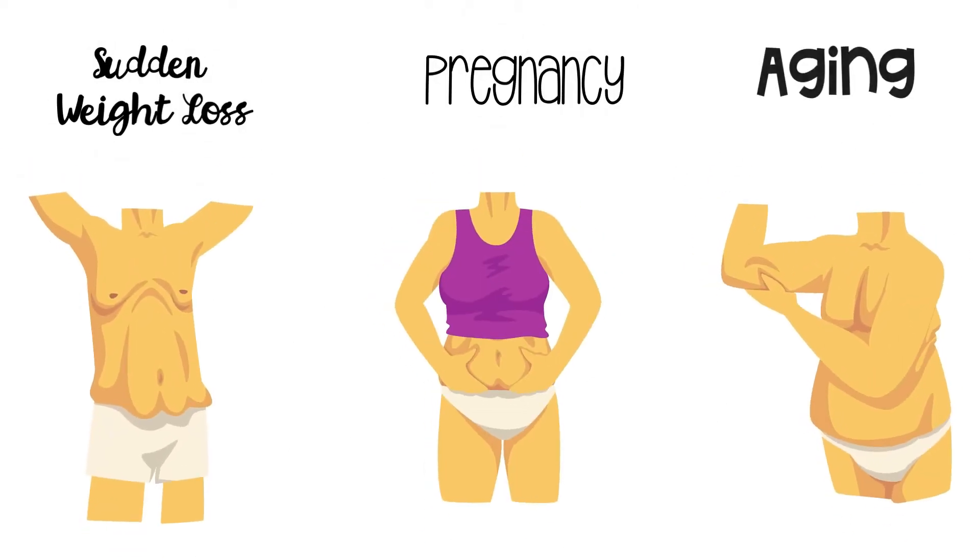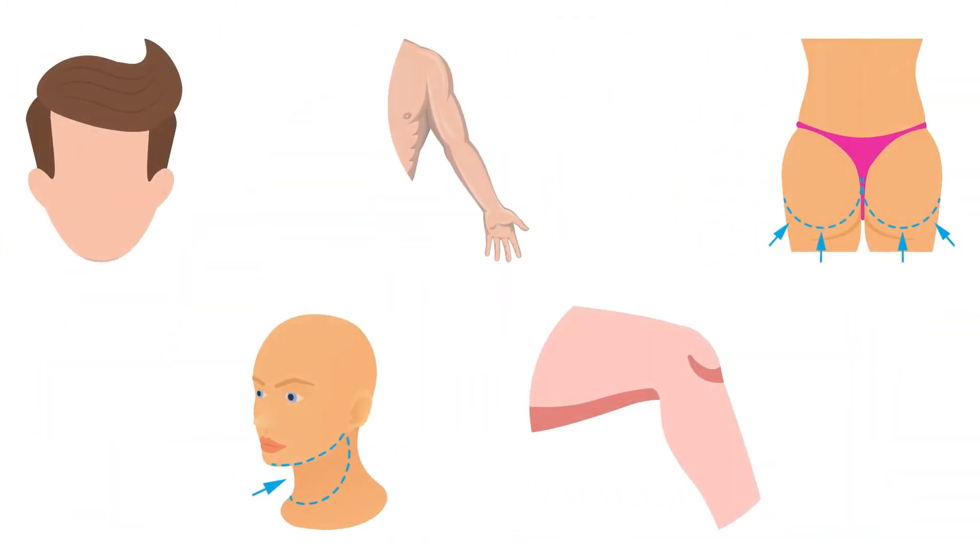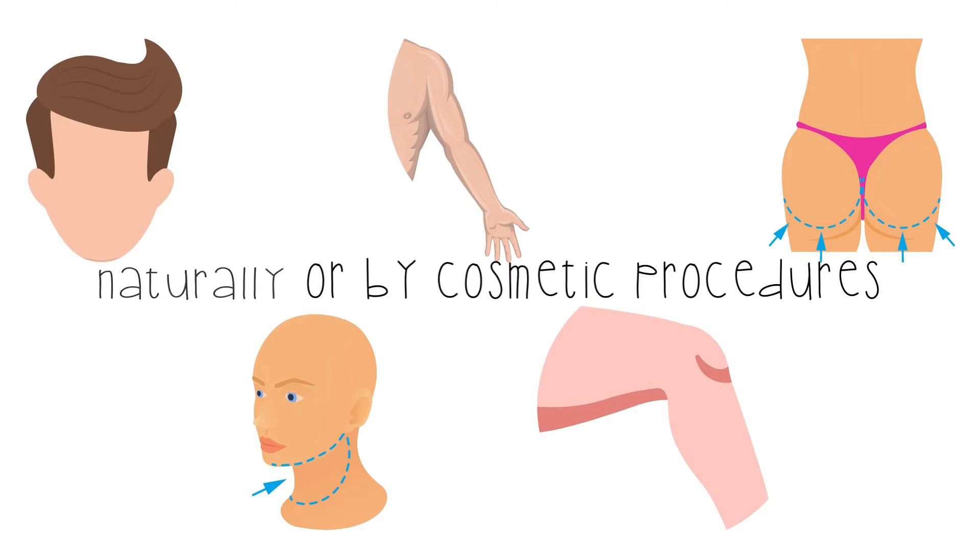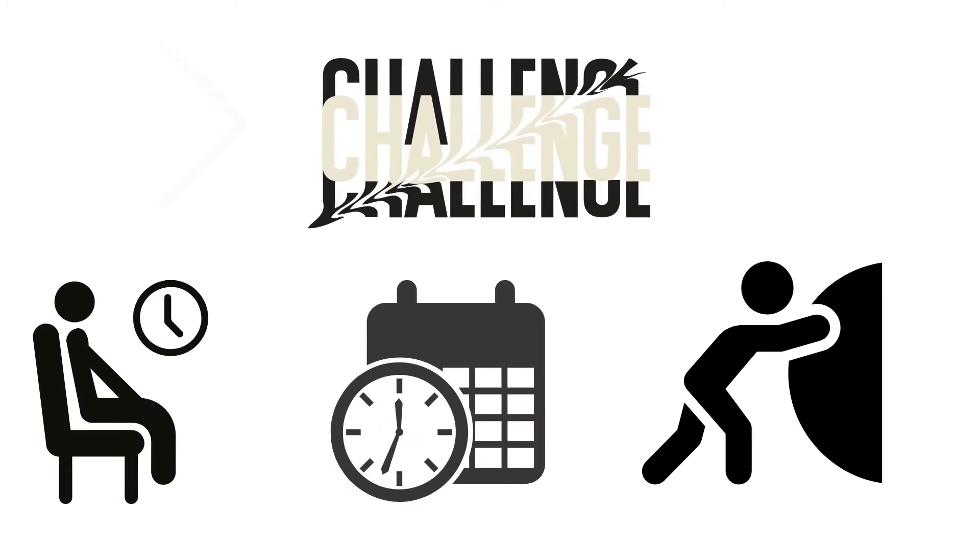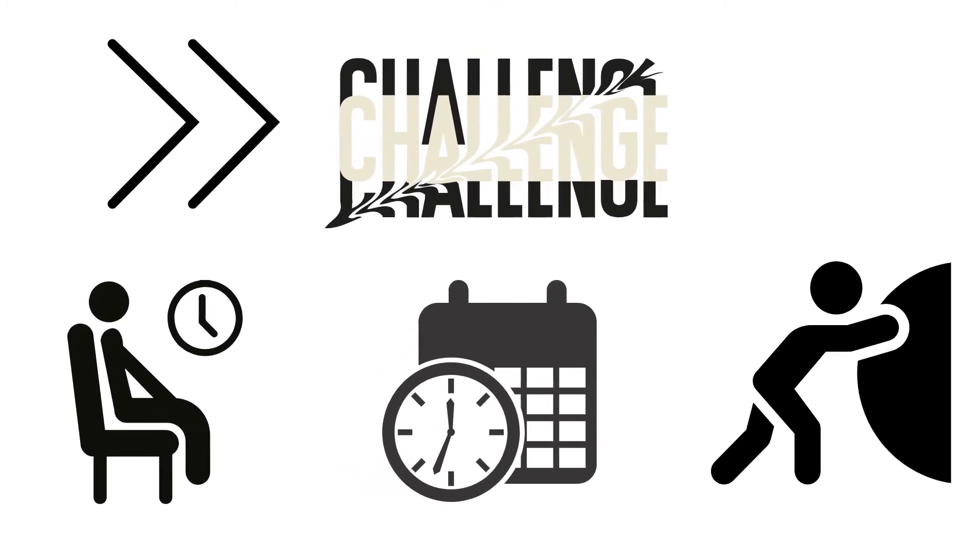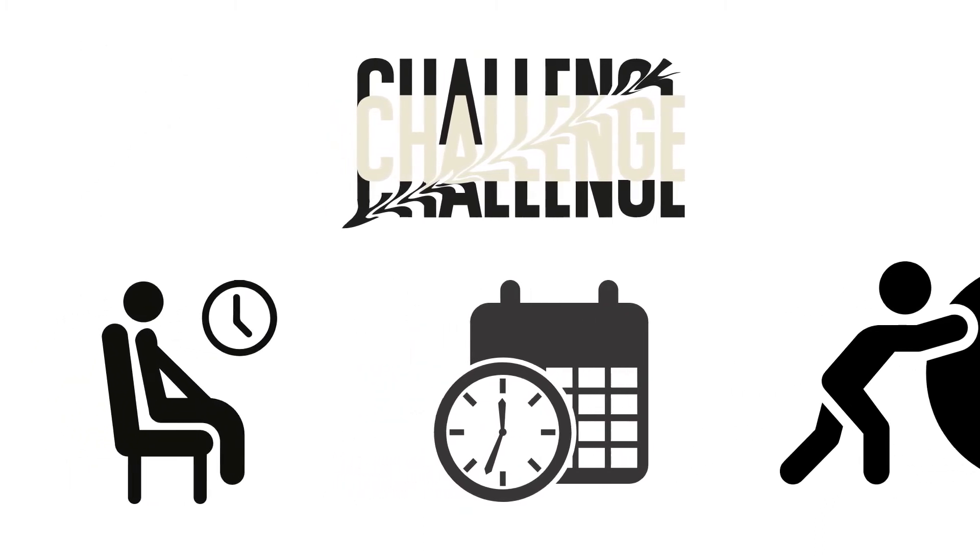Loose saggy skin usually appears on the face, neck, arms, legs, and buttocks. It can be improved naturally or by cosmetic procedures, but tightening loose skin naturally is challenging and takes patience, time, and effort.